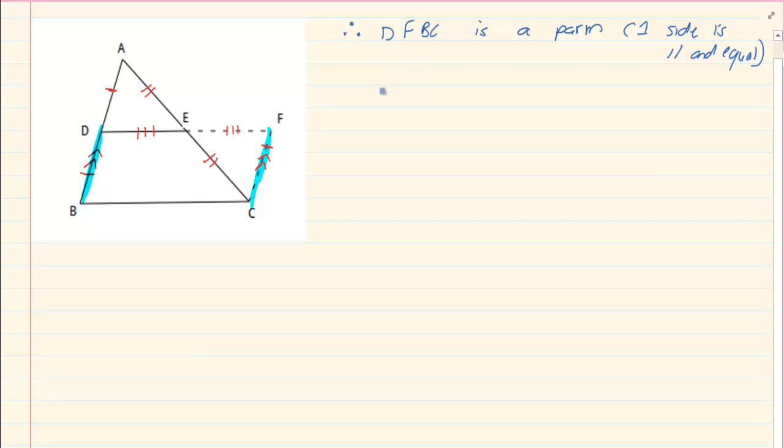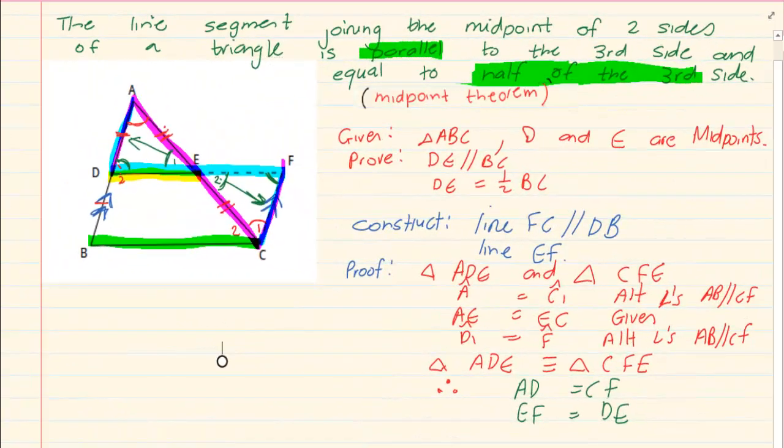Now if it is parallel, then we know DF has to be parallel to BC because that is a property of a parallelogram. Which is one of the things we have to prove. So this is one of the things we have to prove. We have to prove that DE is parallel to BC.